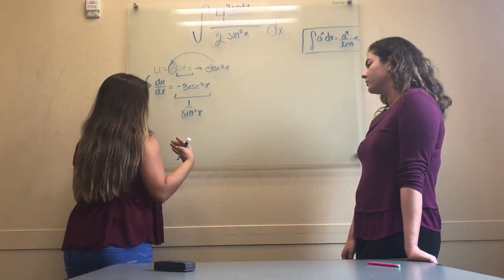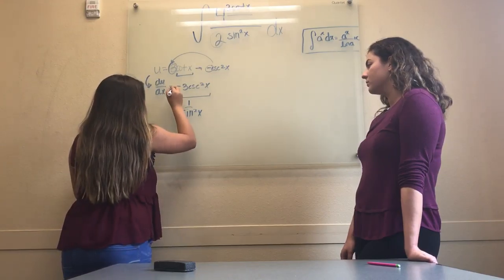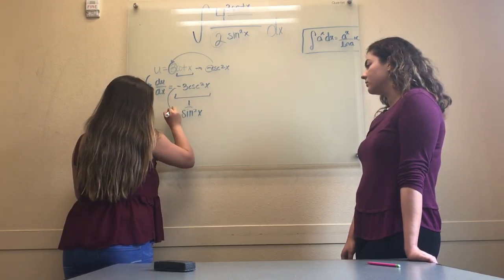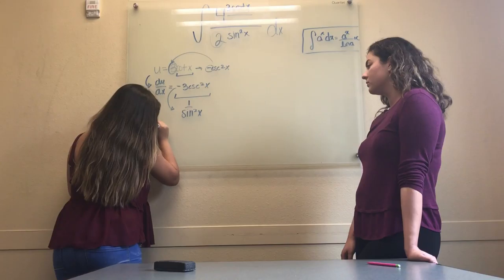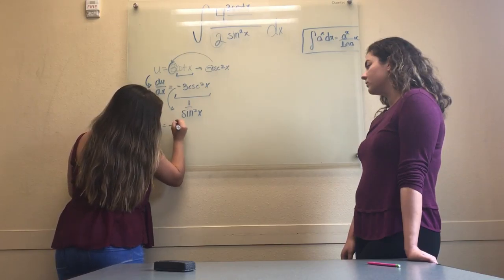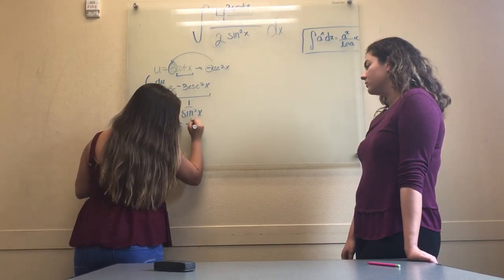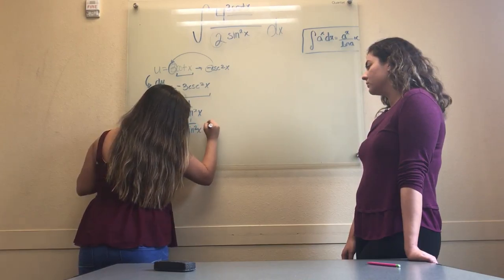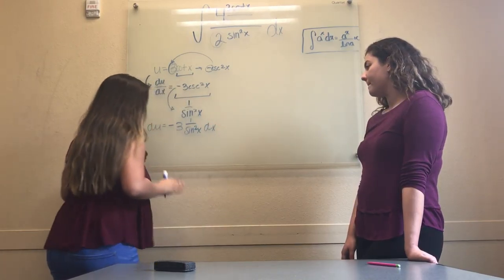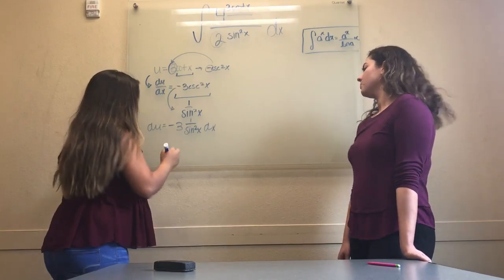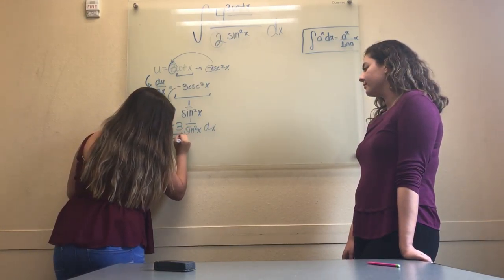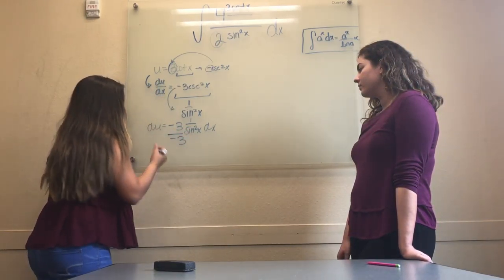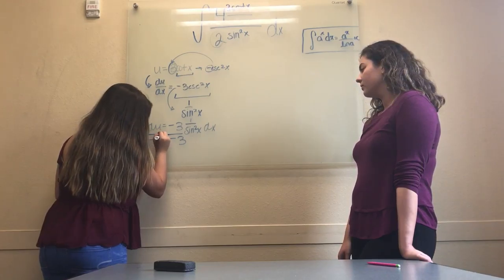As I said before, we can't ignore the 3, so we bring the negative 3 in front of the equation, making it du over negative 3 equals 1 over sin squared x dx. To completely isolate the du, we divide by negative 3. Therefore, du becomes du over negative 3.